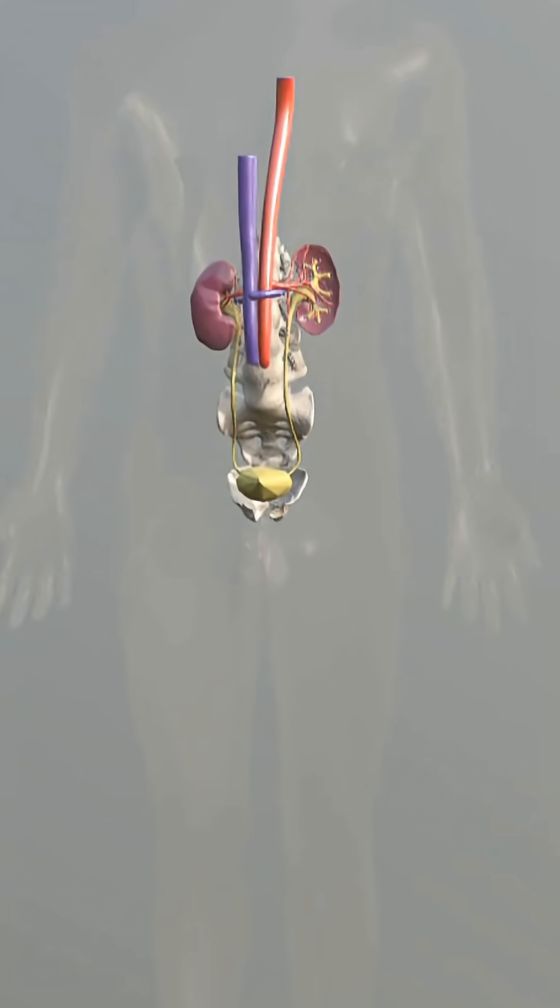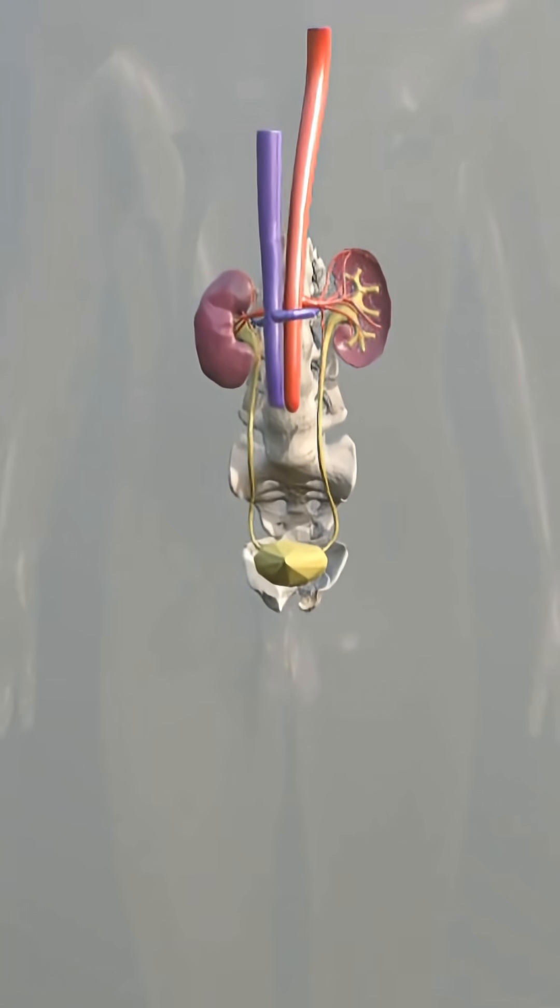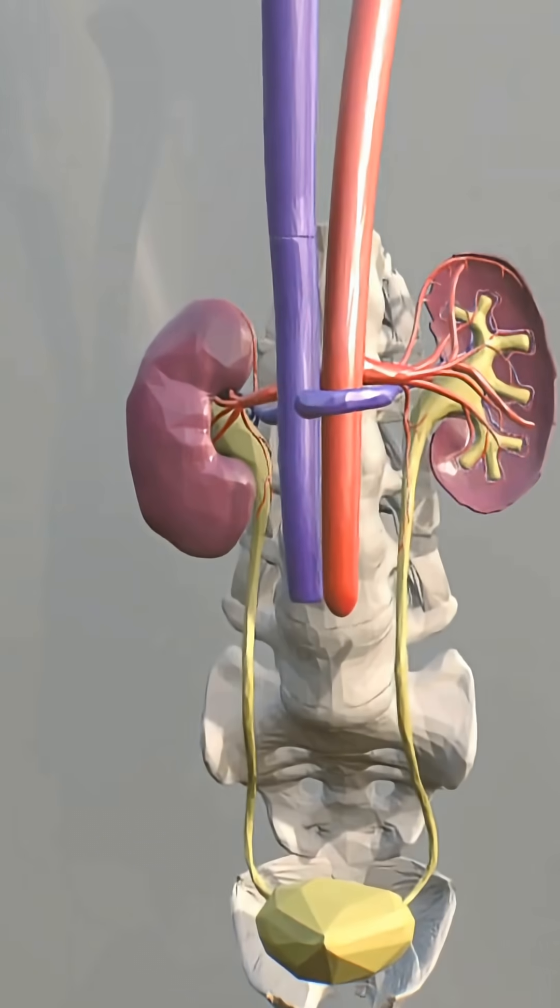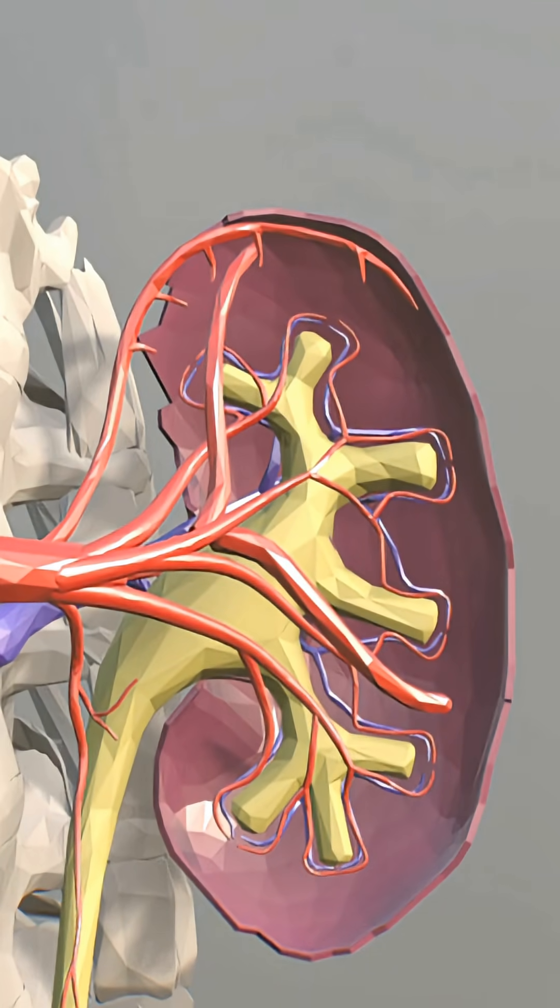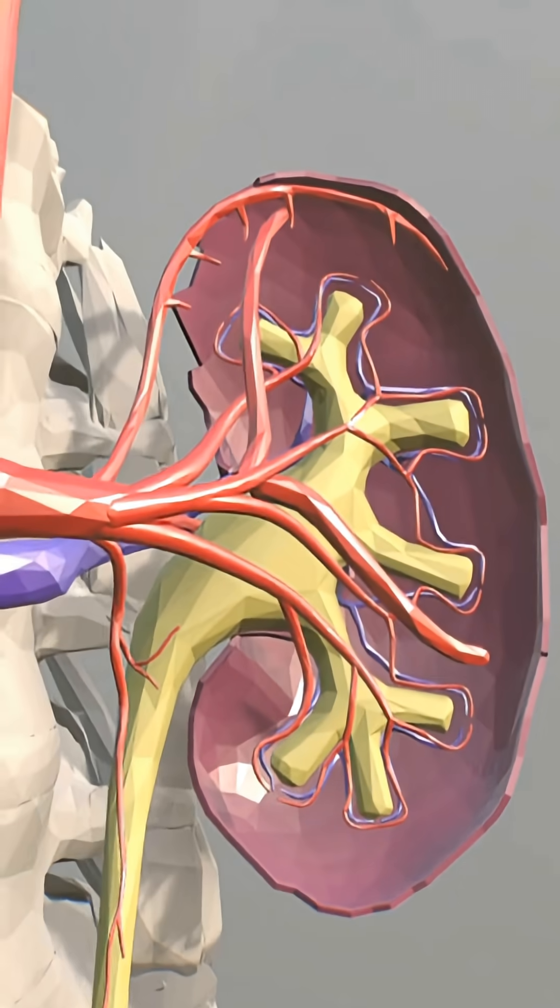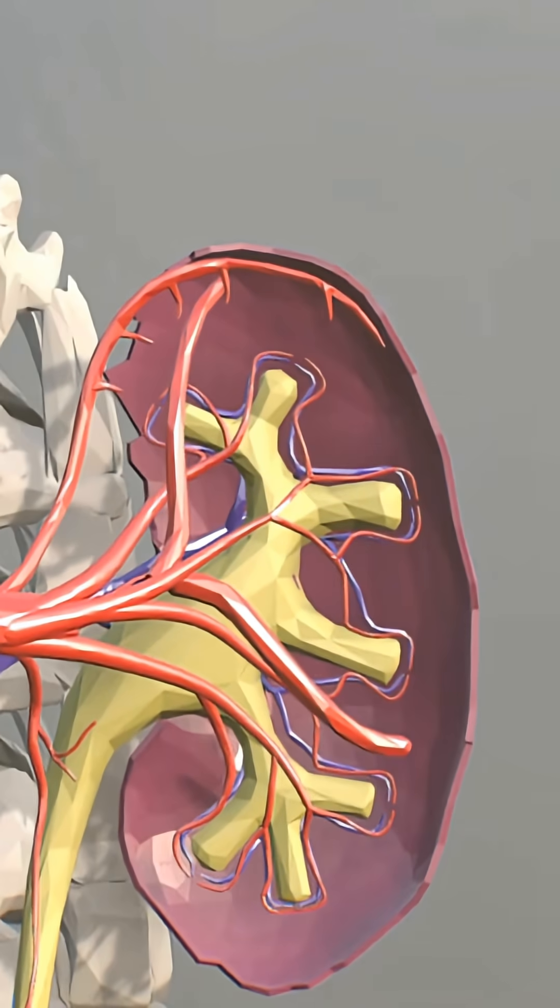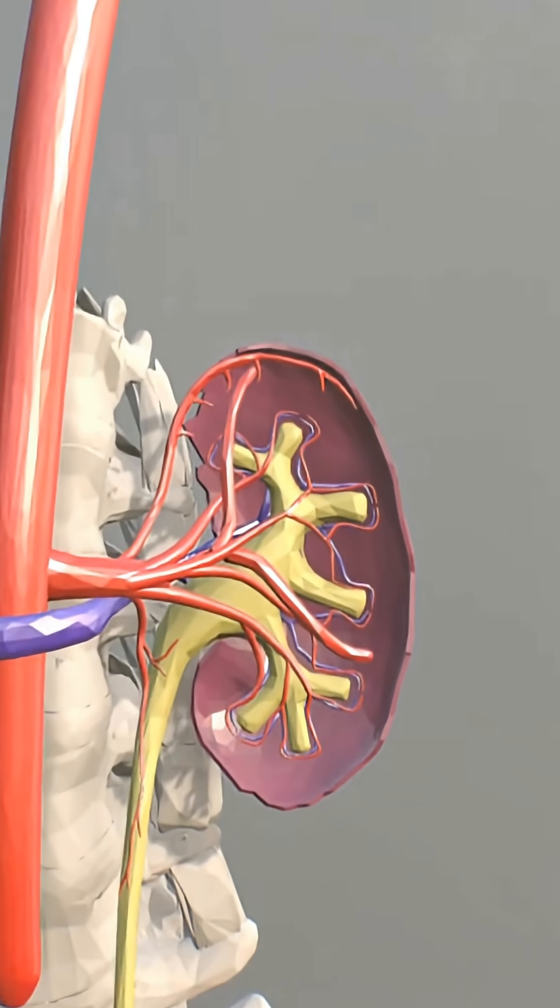Looking closely at this cross-section, this is where the real engineering happens. The outer layer is the renal cortex and the inner structures are the renal pyramids. Inside here are millions of microscopic filtering units called nephrons.